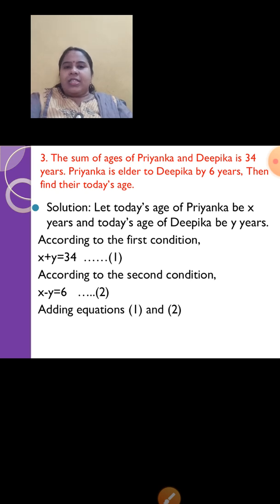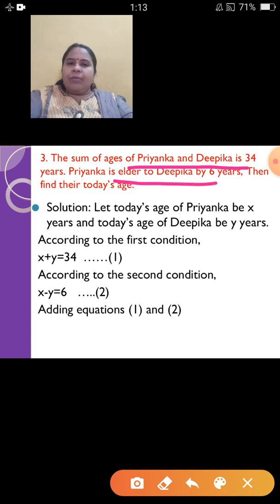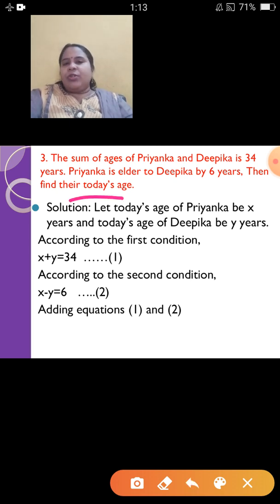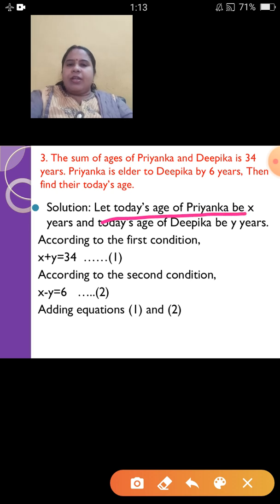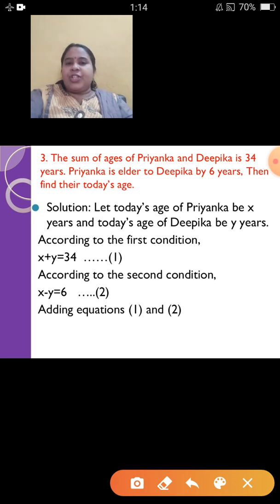Let us come to the third sum — it is easier than the previous two. The sum of ages of Priyanka and Deepika is 34 years. Priyanka is elder to Deepika by 6 years. Find their today's ages. From the last part, let today's age of Priyanka be X and that of Deepika be Y. 'Sum' means plus, so equation 1 is X + Y = 34. Priyanka is elder than Deepika by 6, so the difference is 6: X − Y = 6. That is equation 2.